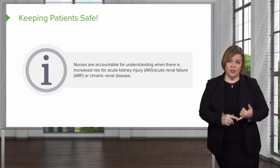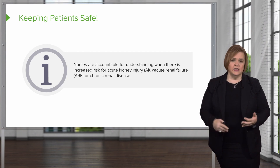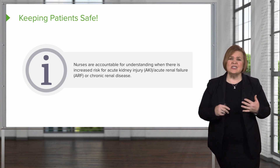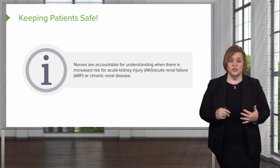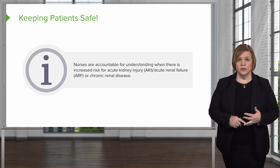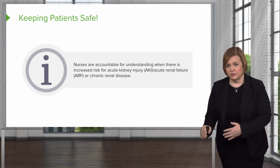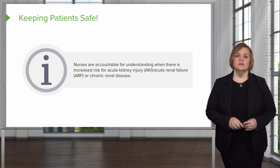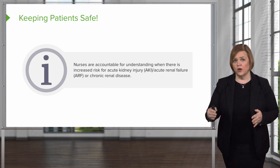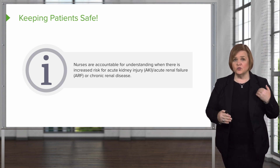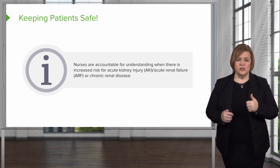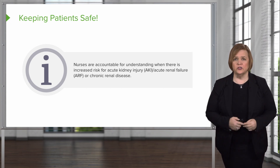Maybe the patient's blood pressure has dropped — they're hypotensive and the kidneys are not being perfused. That can put them at risk for acute kidney injury. Or maybe they're severely dehydrated, which is another reason why those kidneys aren't getting perfused well. At the other end of the spectrum is chronic renal disease — kidney damage and deterioration that has happened over a period of time. Our job as nurses is to watch patients with chronic renal disease ultra closely.